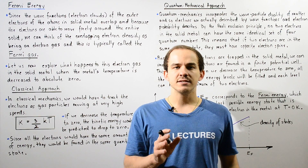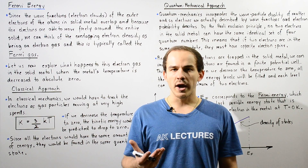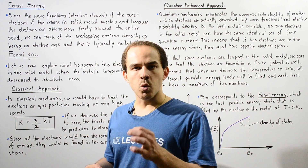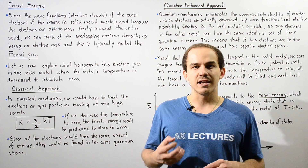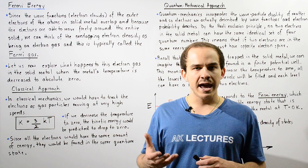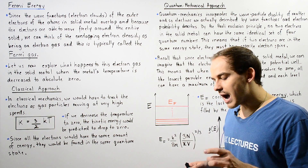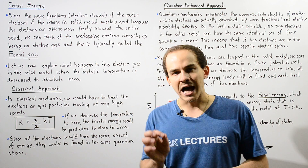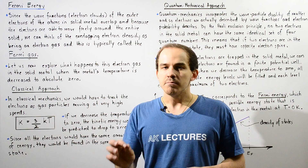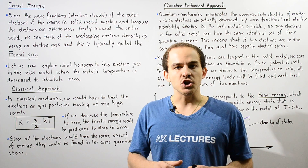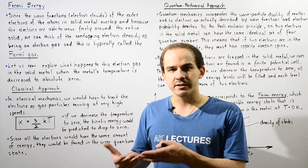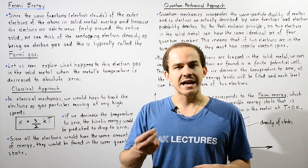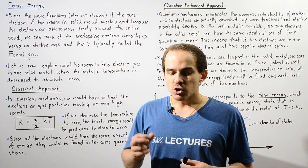In the previous lecture, we discussed the density of states equation, which is basically a mathematical function that gives us the number of quantum states that the electrons inside a solid metal can actually take. We saw that inside a solid metal, the outer electrons of all the individual atoms are allowed to move around that metal, but those electrons are trapped within it. In a way, we can think of those electrons as being inside a finite electric potential well.